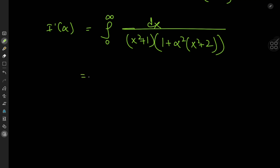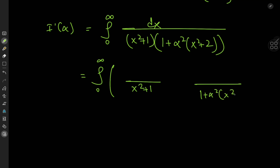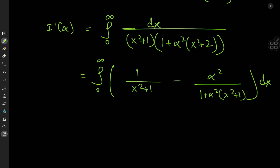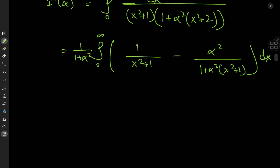All we need now is a partial fraction decomposition. We write the integrand as a sum over (x²+1) and (1 + α²(x²+2)). Working out the numerators: placing 1 over the first factor requires an α² term on the second to cancel the α²x² terms, and to balance everything out we need a 1/(1+α²) term. That's our partial fraction decomposition, giving us two very simple integrals to evaluate.